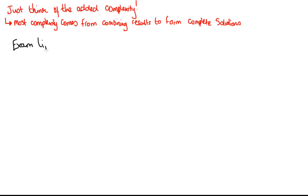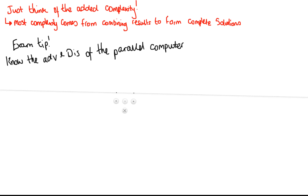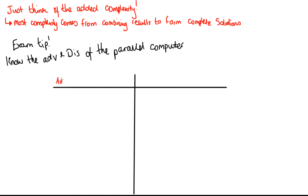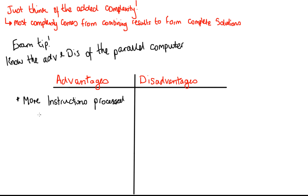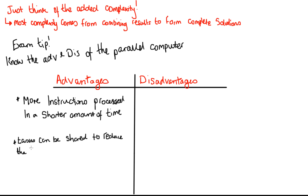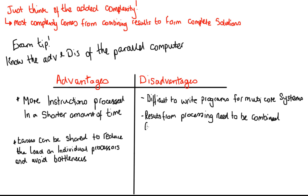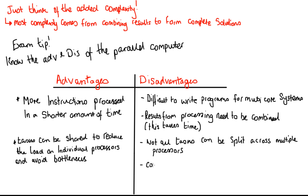Now for an exam tip: you need to know all of the advantages and disadvantages of parallel computing. Most of our modern day systems have parallel computing involved at some point. Advantages: more instructions are processed in a shorter amount of time, and tasks can be shared to reduce the load on individual processors, which avoids bottlenecks. Disadvantages: it's difficult to write programs for multi-core systems, results from processing need to be combined which takes up valuable time, and not all tasks can be split across multiple processors.